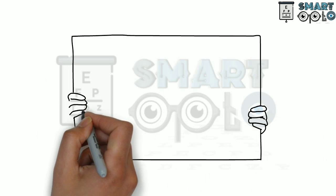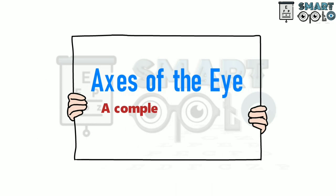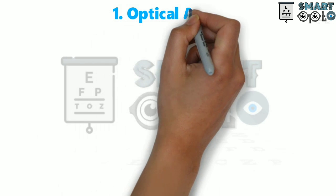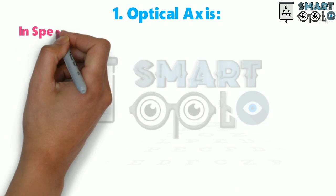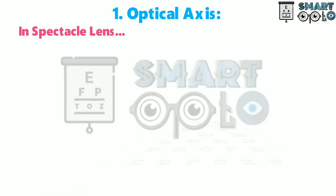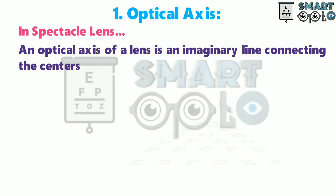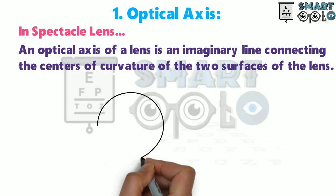Hello viewers, today in this video let us look into the axes of the eye. The first one is about optical axis. In a spectacle lens, the optical axis of a lens is an imaginary line connecting the center of curvature of the two surfaces of the lens.